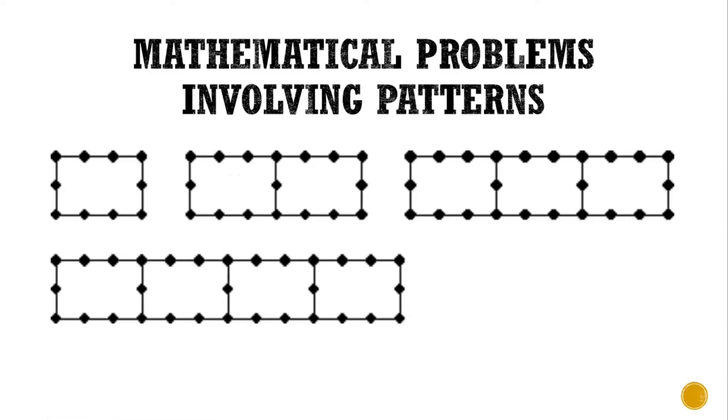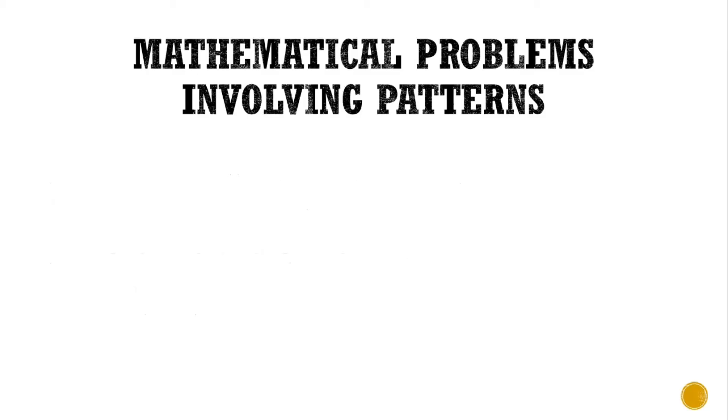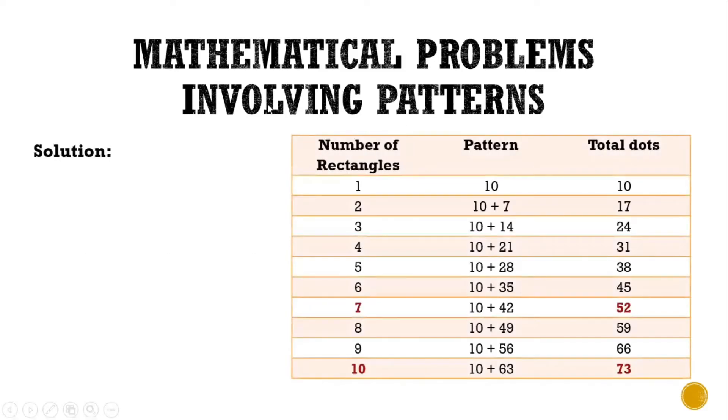To easily identify the pattern, we can tabulate the problem. In the first column, we have the number of rectangles, and here is the pattern. For the first rectangle, there are only 10 dots, so total dots we have 10. For 2 rectangles, we have 10 plus 7, so total dots is 17. If we have 3 rectangles, we have 10 plus 7 plus 7, which equals 14, for a total of 24.